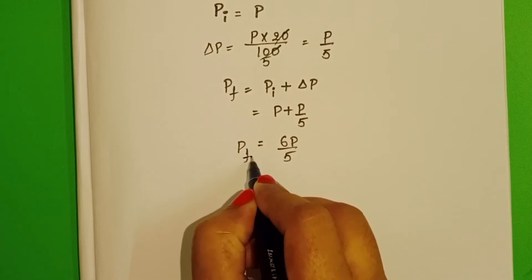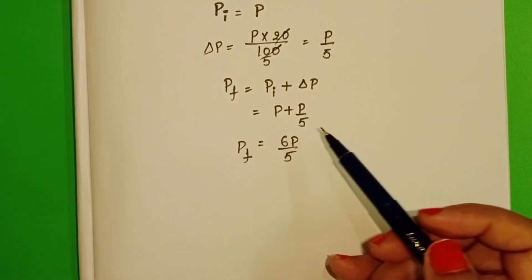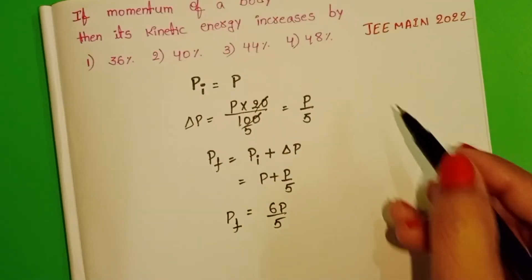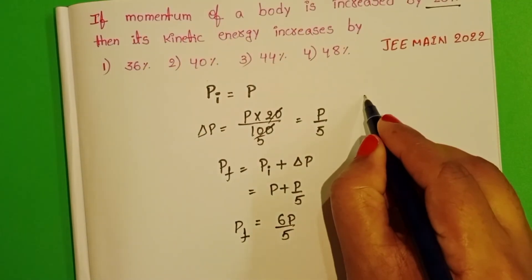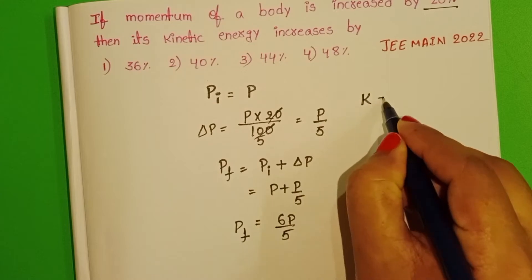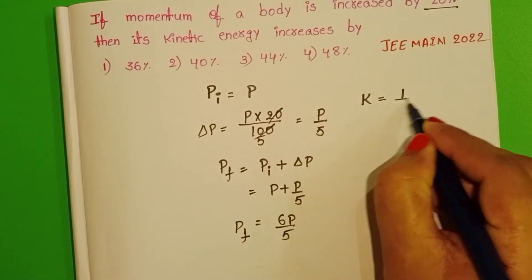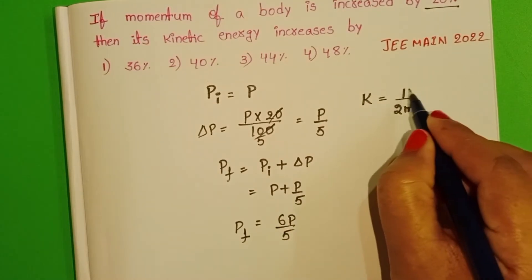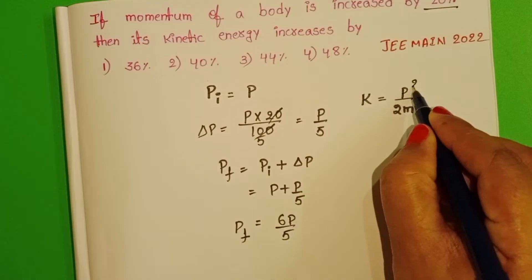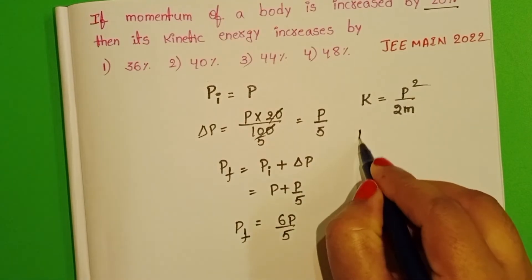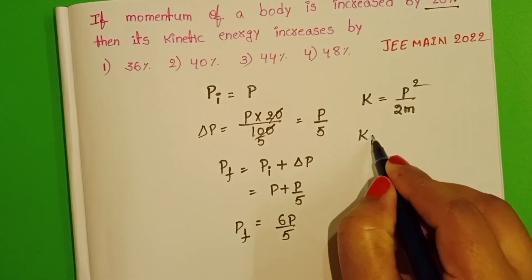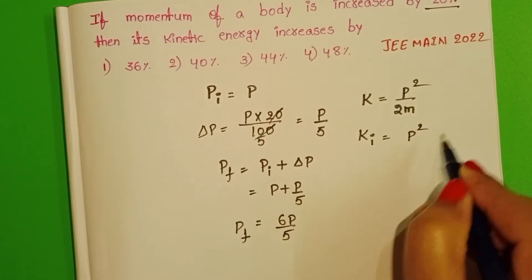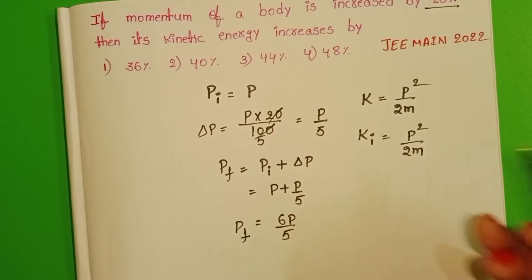The relation between kinetic energy and momentum: kinetic energy is equals to P squared by 2m. So, initial kinetic energy is equals to P squared by 2m.